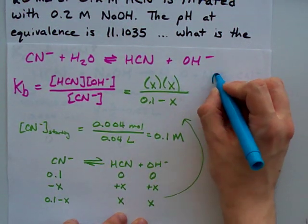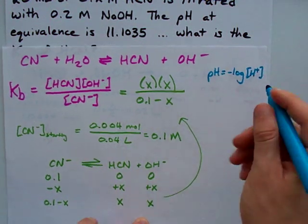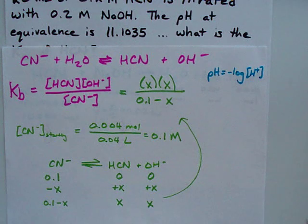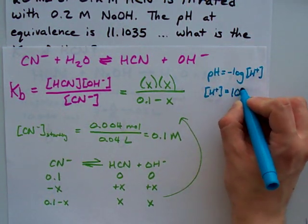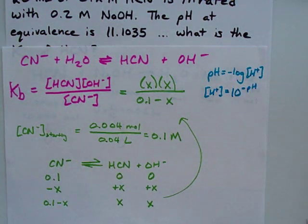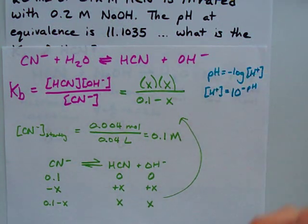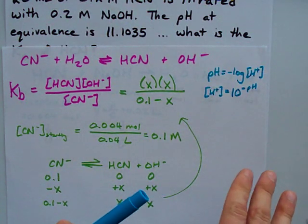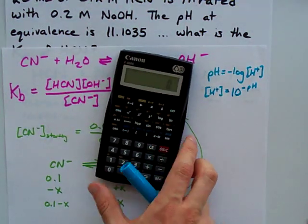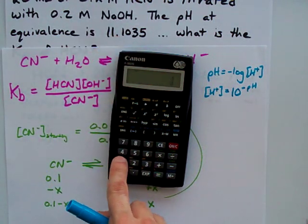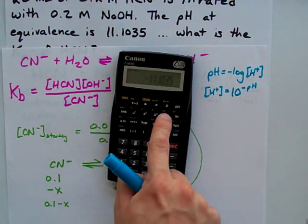What you'll remember about pH is that it's the negative log of your H plus concentration or H3O plus if you prefer. Which means that your H plus concentration is 10 to the power of negative pH. Another way you can go about doing this is finding the pOH and getting your OH concentration. But what I'm going to do here is get my H plus concentration by doing my pH is 11.1035, I'm going to make that negative and I'm going to do 10 to the power of that.